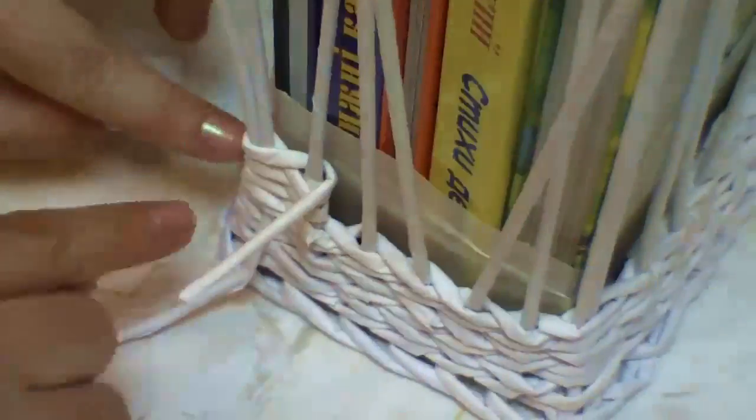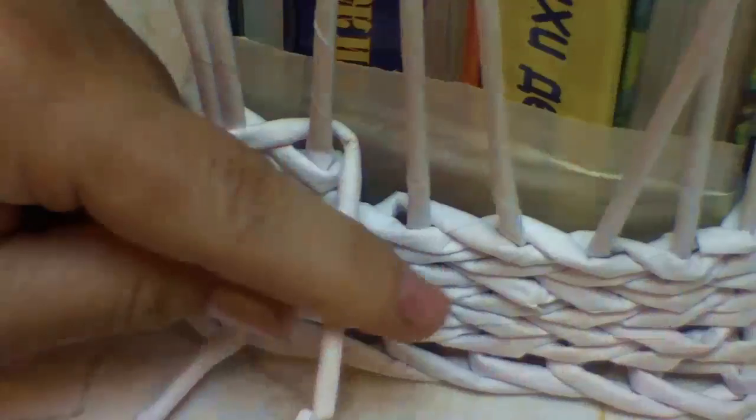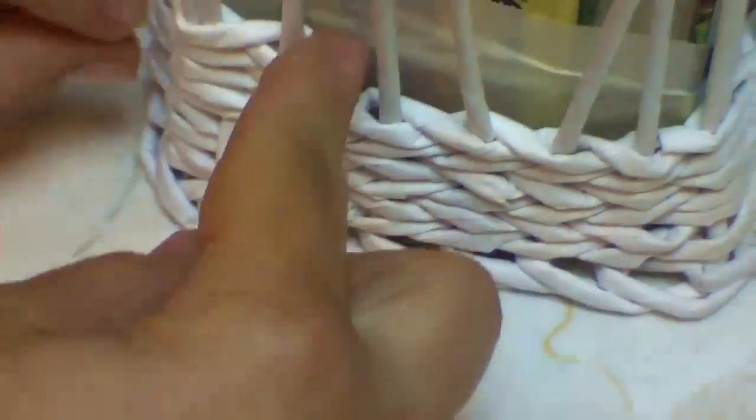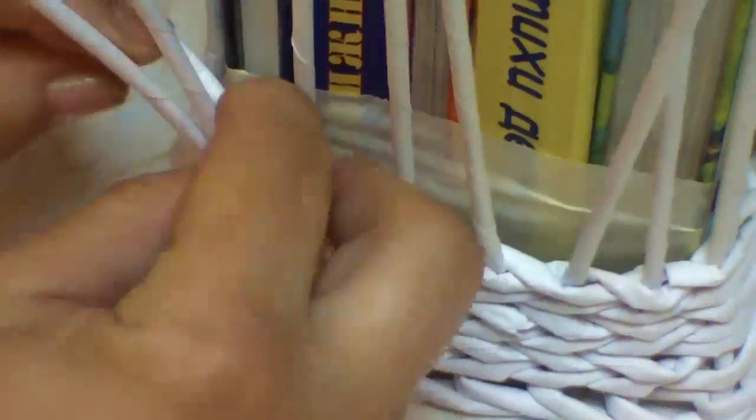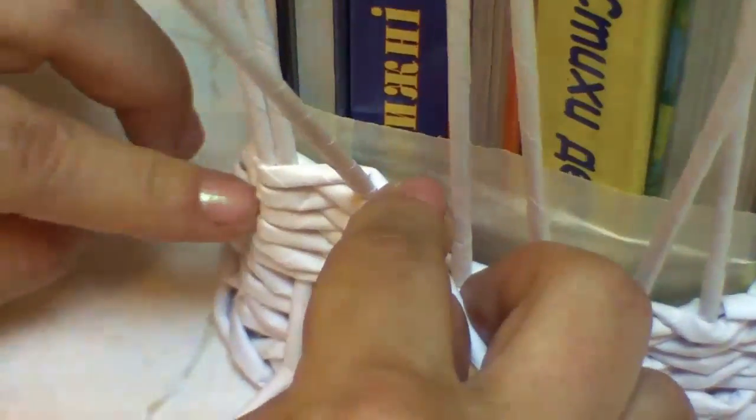Here we have to define the number of the coils at once. We have to get the number of the coils required to get a square. For big baskets with big intervals between the poles it can be one quantity. For the small articles it will be less. Usually it is three or four coils. Look, one, two, three coils. So far it is enough. The next step.